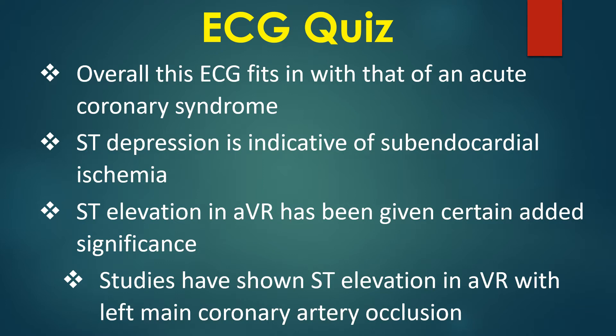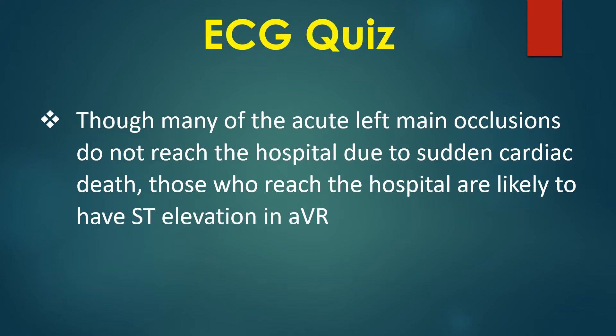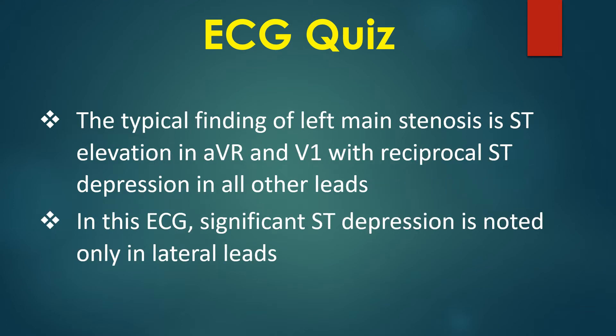Studies have shown ST elevation in AVR to be associated with left main coronary artery occlusion. Though many acute left main occlusions do not reach the hospital due to sudden cardiac death, those who do are likely to have ST elevation in AVR. The typical finding of left main stenosis is ST elevation in AVR and V1 with reciprocal ST depression in all other leads.